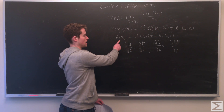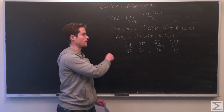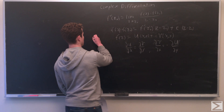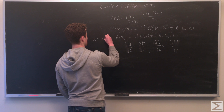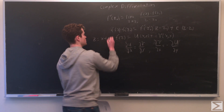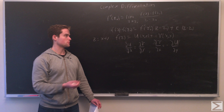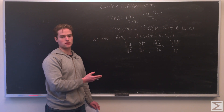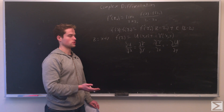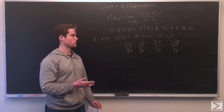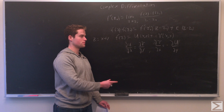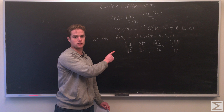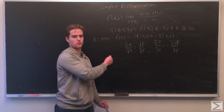Our function of a complex variable can be written as u(x, y), where z equals x plus iy. The complex and real parts of our function can also be considered functions of two real variables, x and y. If the function satisfies the Cauchy-Riemann equations it is differentiable, and if it is differentiable it will satisfy these equations.